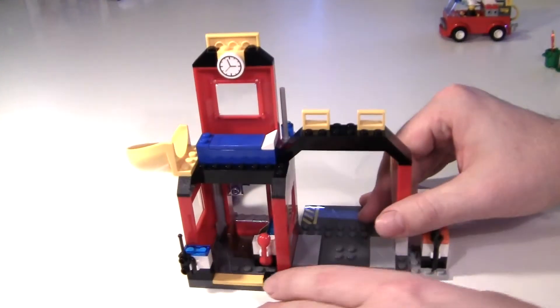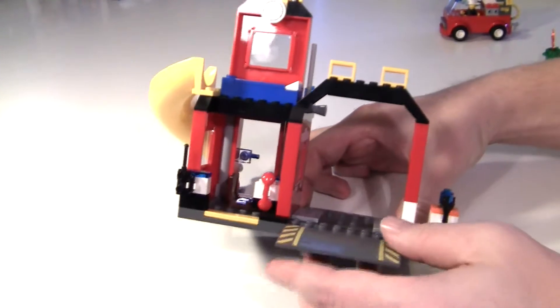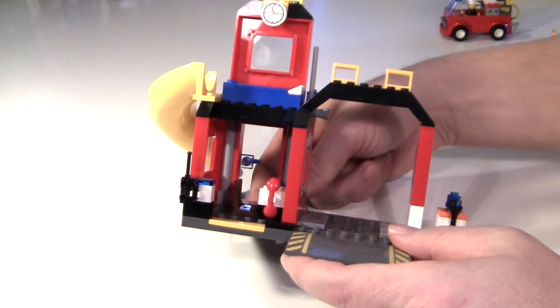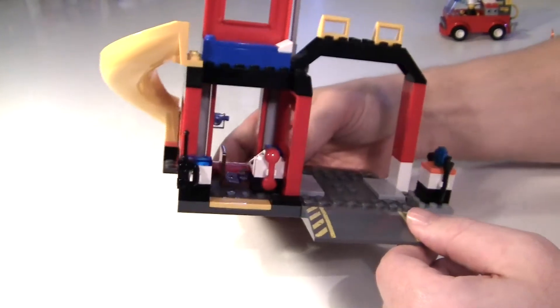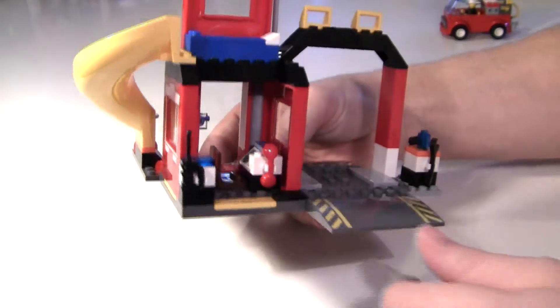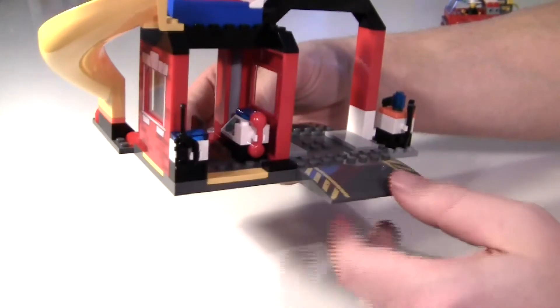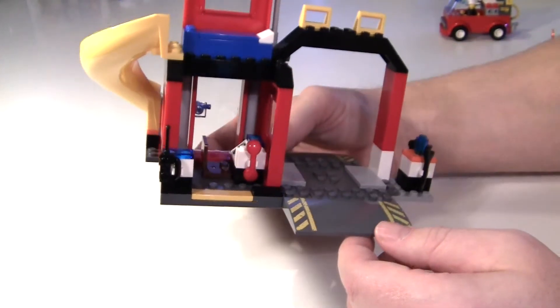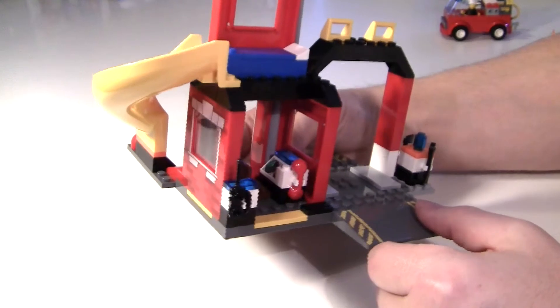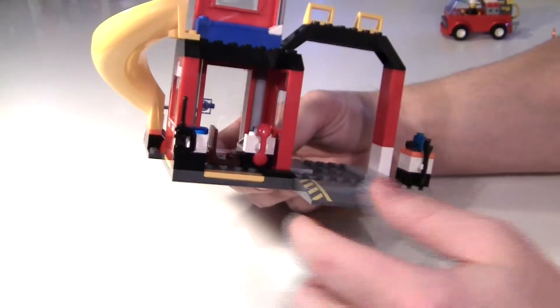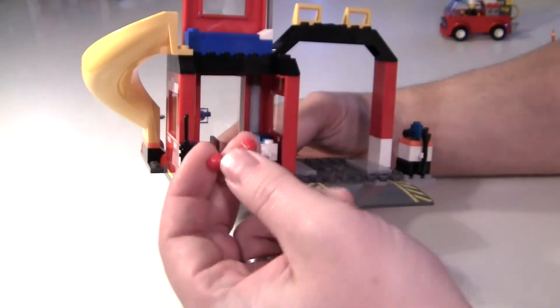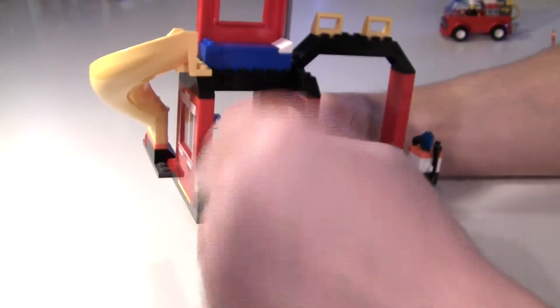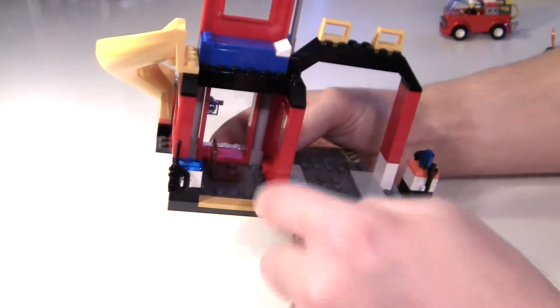In the back you have this small little office where they get the alarms inside. And I don't know if you can see, but there's this block in here where there's a little red phone, just like this, an old fashioned red phone.